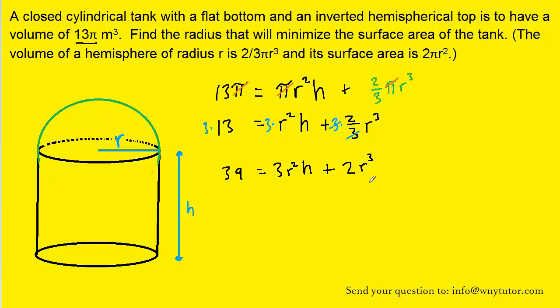This equation can actually be solved for h rather easily by first subtracting 2r³ from both sides of the equation, and then we can divide both sides by 3r², and that's going to allow us to isolate the h. Now this is a result that we can hold on to, and we will be using it momentarily, so let's just set that aside for now.